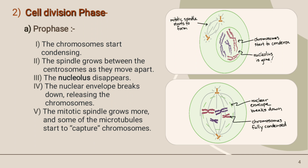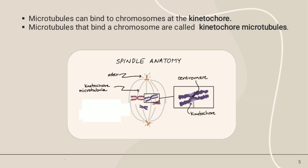The spindle grows between the centrosomes as they move apart. The nuclear envelope breaks down, releasing the chromosomes. Microtubules can bind to chromosomes at the kinetochore. Microtubules that bind to chromosomes are called kinetochore microtubules.